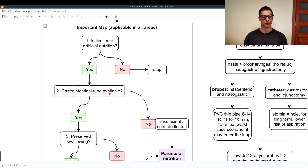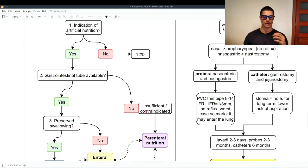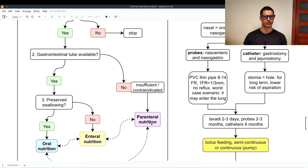The gastrointestinal tube is available? No. Maybe because it is insufficient or contraindicated to use the gastrointestinal tube because of a certain disease. Therefore if the gastrointestinal tube is not available we go straight to the parenteral nutrition.